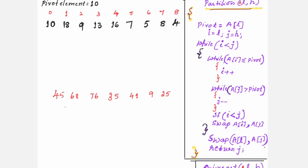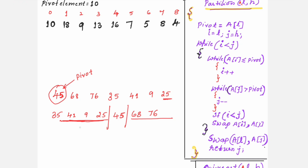Before carrying out the tracing, let me first show you the logic used here. Suppose these are the elements: 45, 68, 76, 35, 41, 9, 25. The algorithm makes one element the pivot element. You can take the first element, the last element, or randomly choose any element as the pivot. Once you execute the algorithm, the pivot element is placed at its correct position — all elements with lower value than the pivot are to its left, and all elements with greater value are to its right.